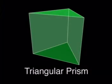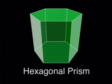Prisms are classified according to their bases. For example, a prism with triangular bases is called a triangular prism and a prism with hexagonal bases is called a hexagonal prism.